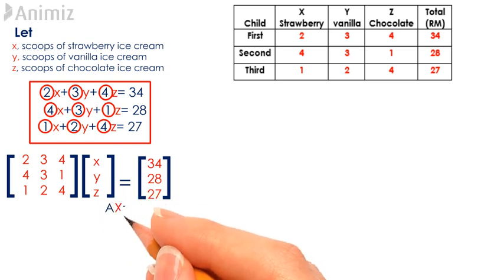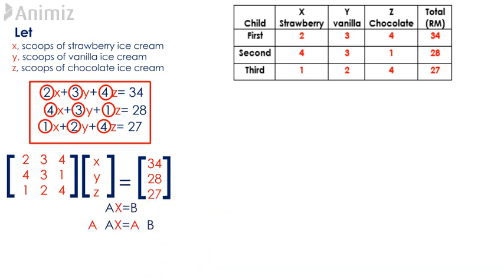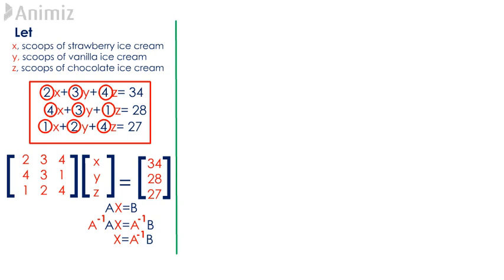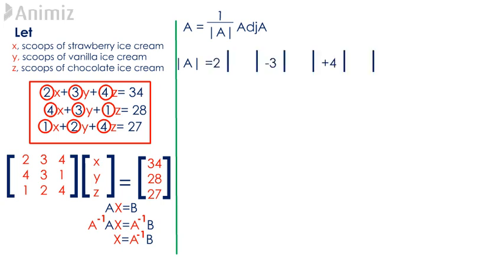From AX equals B, multiplying both sides by A inverse gives us X equals A inverse B. Do take note that A inverse can be found by using the formula 1 divided by the determinant of A, multiplied by the adjoint of A. The determinant of A, found by expanding the cofactors of the first row, gives us negative 5.